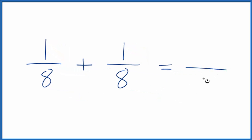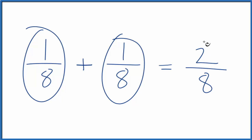Now we can bring the denominator across. We don't change that. And we can add the numerator. One plus one gives us two, so we have two-eighths. That's not surprising. One-eighth and one-eighth, you should get two-eighths.